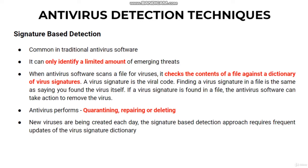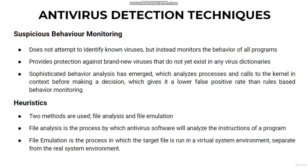The next type of detection technique is suspicious behavior monitoring. The suspicious behavior approach, by contrast, does not attempt to identify known viruses but instead monitors the behavior of all programs. If one program tries to write data to an executable program, for example, the antivirus software can flag this suspicious behavior, alert the user, and ask what action should be taken. Unlike the signature-based approach, the suspicious behavior approach provides protection against brand new viruses that do not yet exist in any virus dictionaries. However, it can also produce a large number of false positives, and users may become desensitized to the warnings.